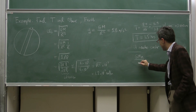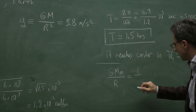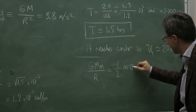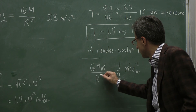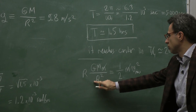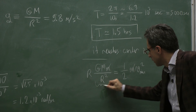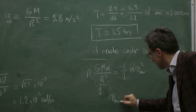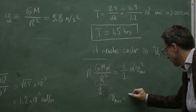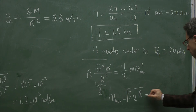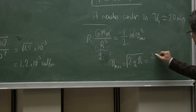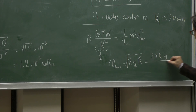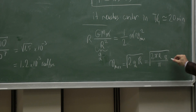So the initial potential energy, G times M times m divided by R, must equal the kinetic energy at the center, which is (1/2) m V_max². M cancels M. Again we use g = G times M divided by R². Multiplying both sides by R, G times M over R equals g times R. So V_max equals the square root of 2 times g times R.